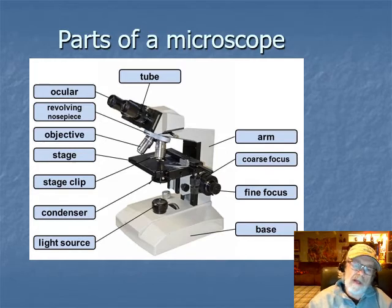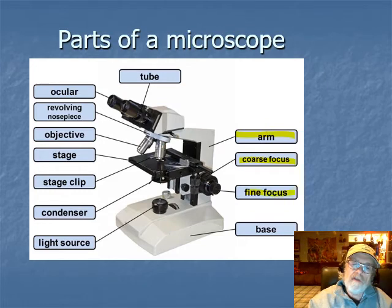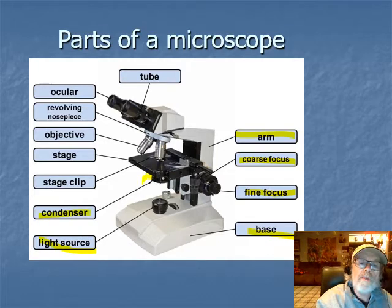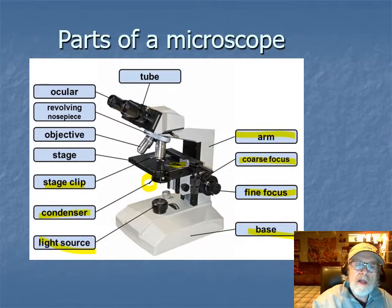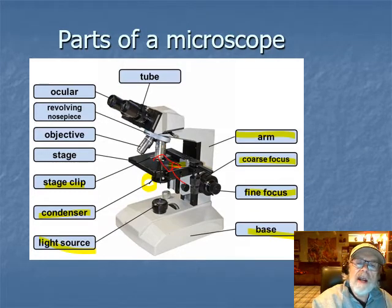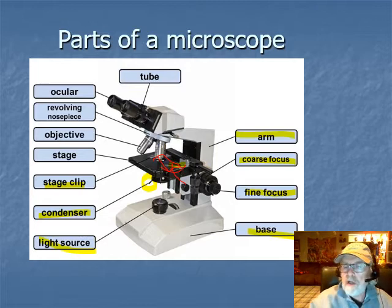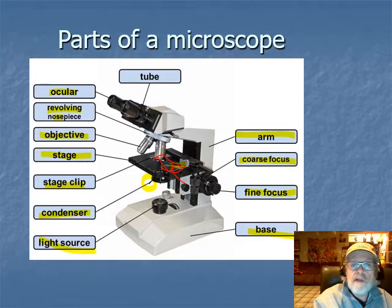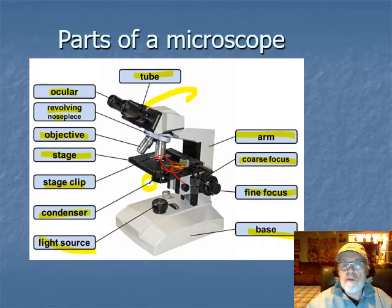Looking at another image showing similar parts: here's the arm, the coarse focus, the fine focus or fine adjustment, the base at the bottom, the light source, the condenser with that little peg sticking out, the stage clip - a little bar on a spring that you pull back, put the slide in, and let go to hold it in place on the stage. There are also the objectives on the revolving nosepiece, the oculars on the eyepiece, and the eyepiece is sometimes also called the tube.